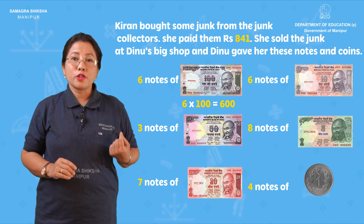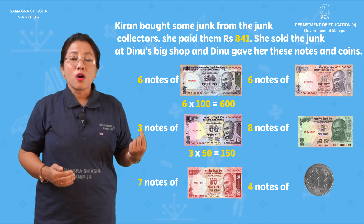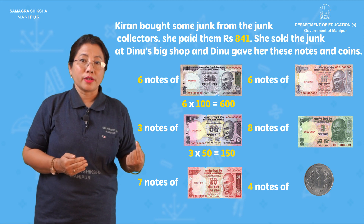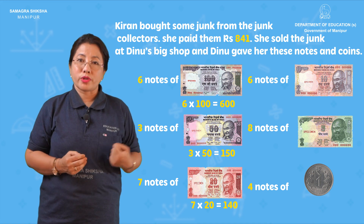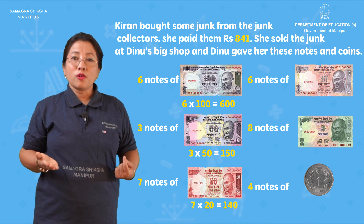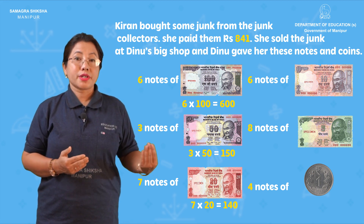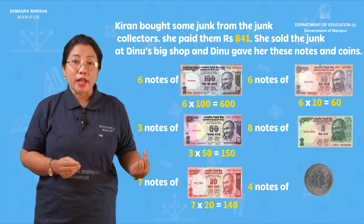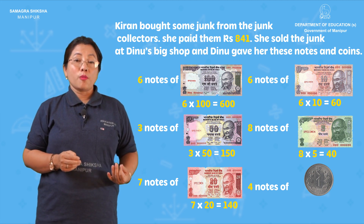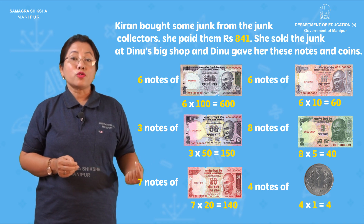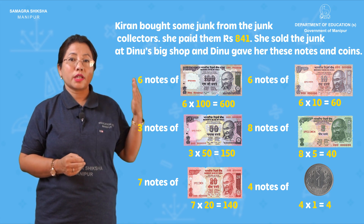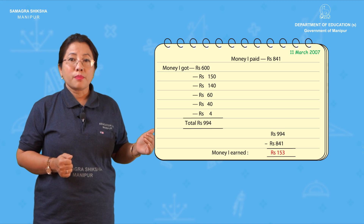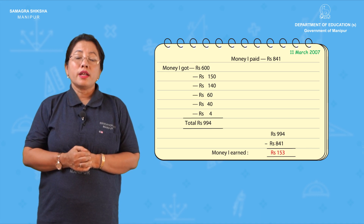Then 50 — what is the count? 3. So 3 times 50 is 150 rupees. Next, we say 20 — what is the count? 7. So 7 times 20 is 140. Then 10 rupees — what is the count? 6. So 6 times 10 is 60 rupees. Then 8 times 5 is 40. Then 4 times 1 is 4 rupees. Pull it all together: 600 plus 150 plus 140 plus 60 plus 40 plus 4. The total is 994 rupees.